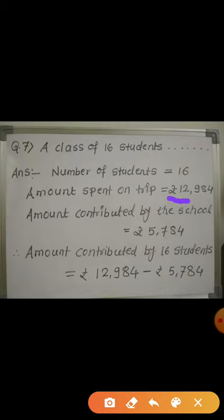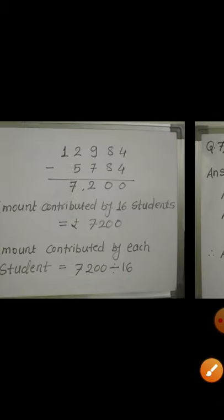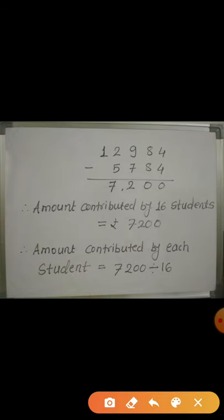Rs. 12,984 is the total amount spent on the trip. Out of that, the school spent Rs. 5,784. If we subtract this from the total amount, we get the contribution of the 16 students. So I subtract 5,784 from 12,984. The subtraction is simple: 4 minus 4 = 0, 8 minus 8 = 0, 9 minus 7 = 2, and 12 minus 5 = 7. So the answer is Rs. 7,200.